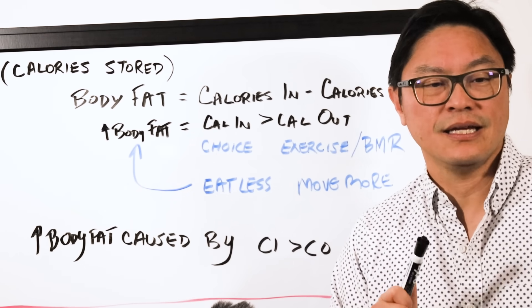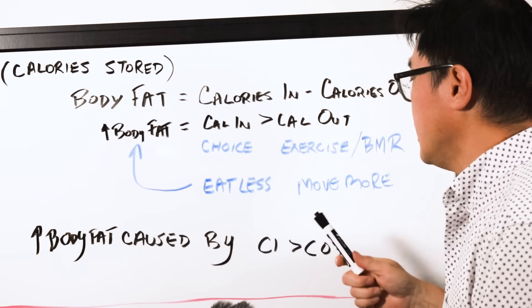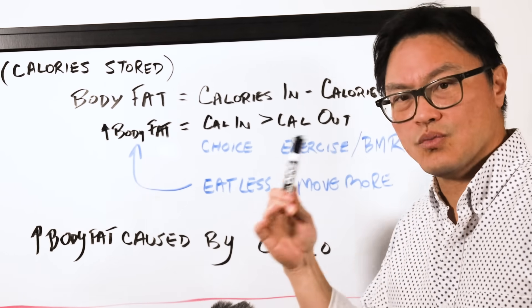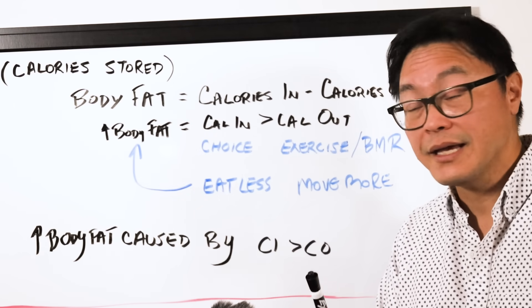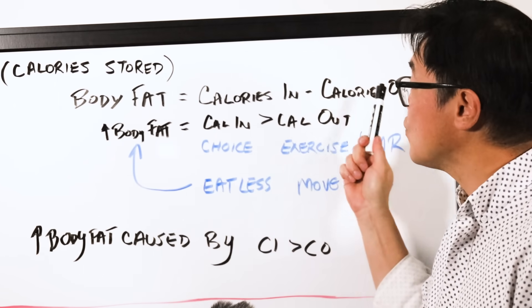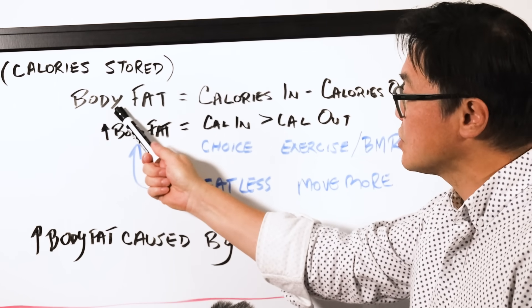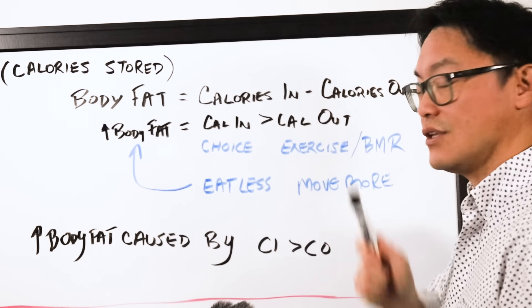The second thing is people often say, if you simply eat less, you'll lose weight. It's a mathematical certainty. That's completely false. Why? Because there are actually three variables here. The calories stored, calories in, and your calories out.